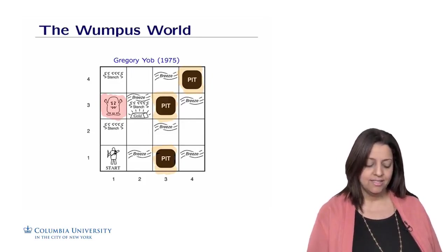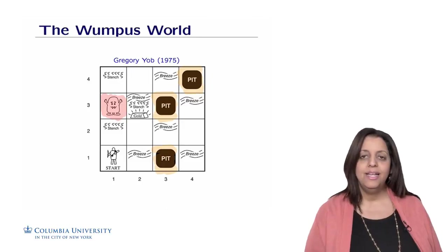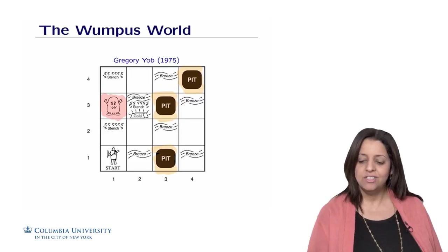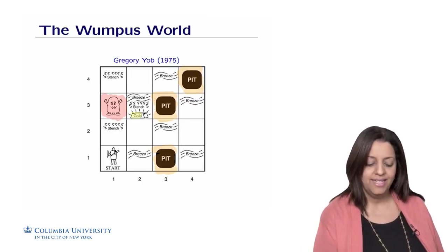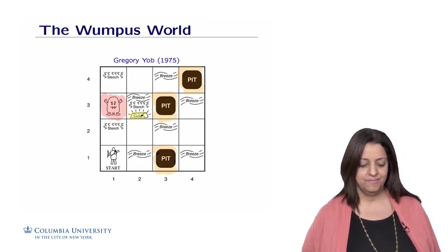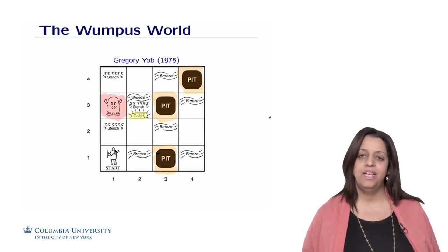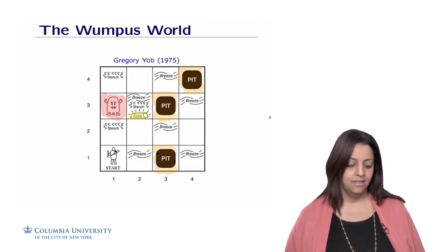We have an agent that starts at room 1-1, and the mission of the agent is to navigate in this environment or the cave without being eaten or without falling in the pit. There is some reward. It's possible for the agent to discover some gold and get it and get out of the cave.